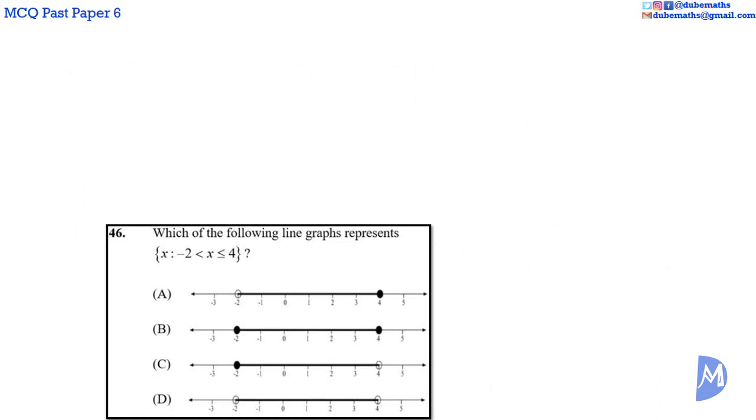Question 46. X such that X is greater than negative 2 but less than or equal to 4. Thus, X takes values from negative 2 to 4. X is less than or equal to 4, so 4 is included. But X is greater than negative 2, so negative 2 is not included. Thus, the circle at negative 2 is not shaded but the circle at 4 is shaded. The answer is A.